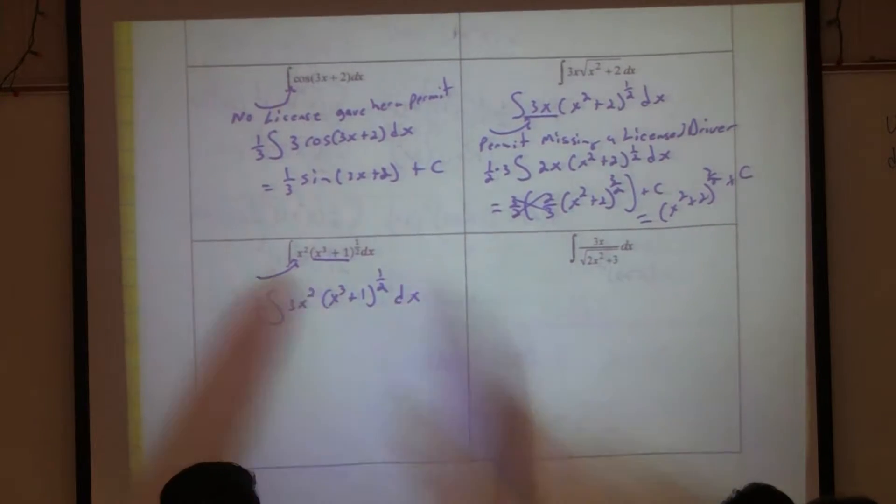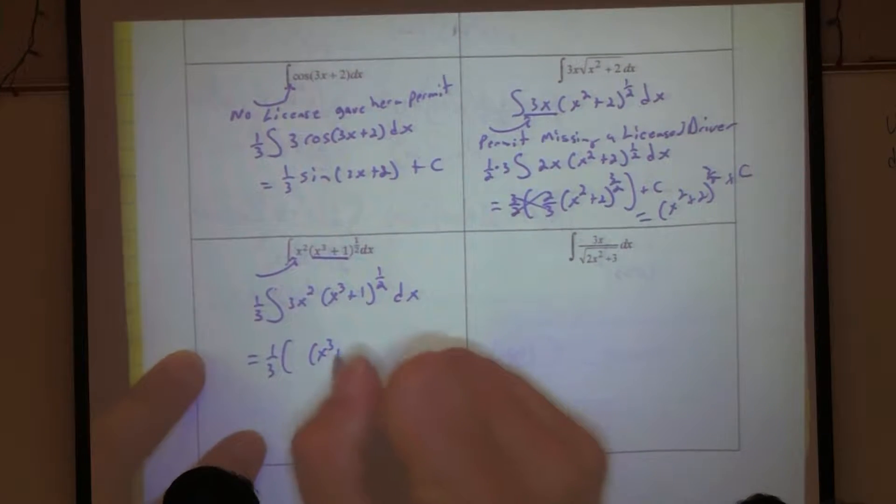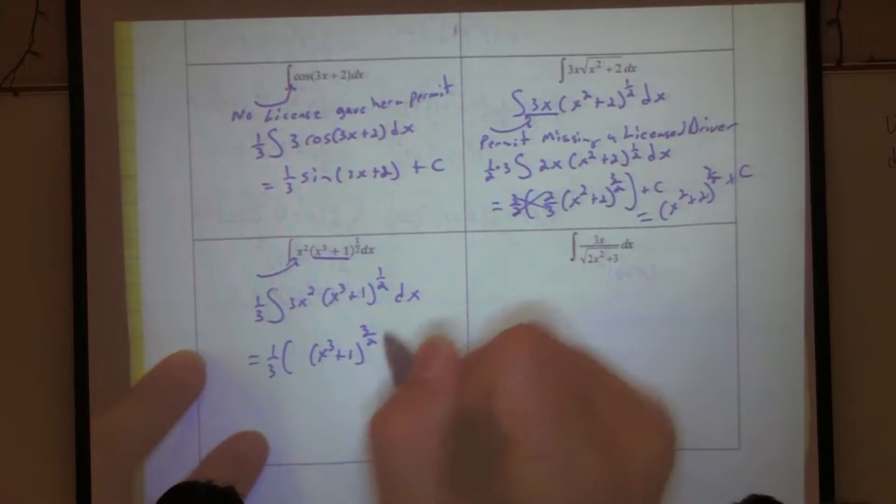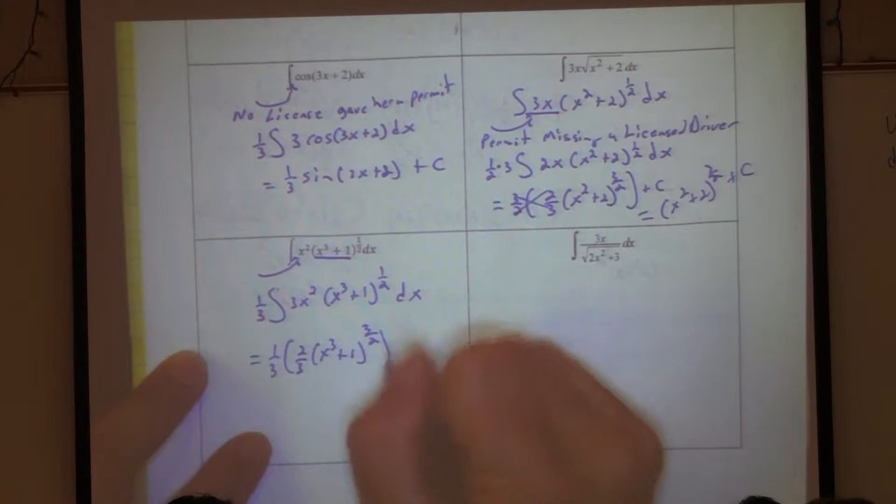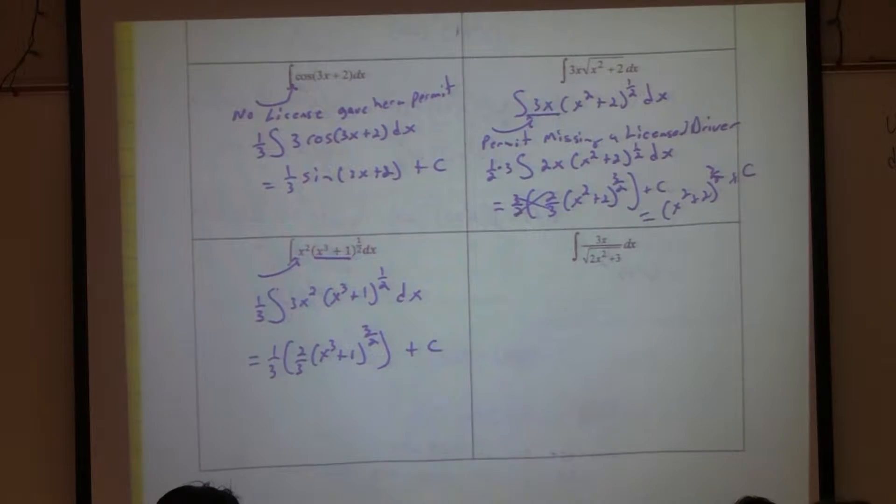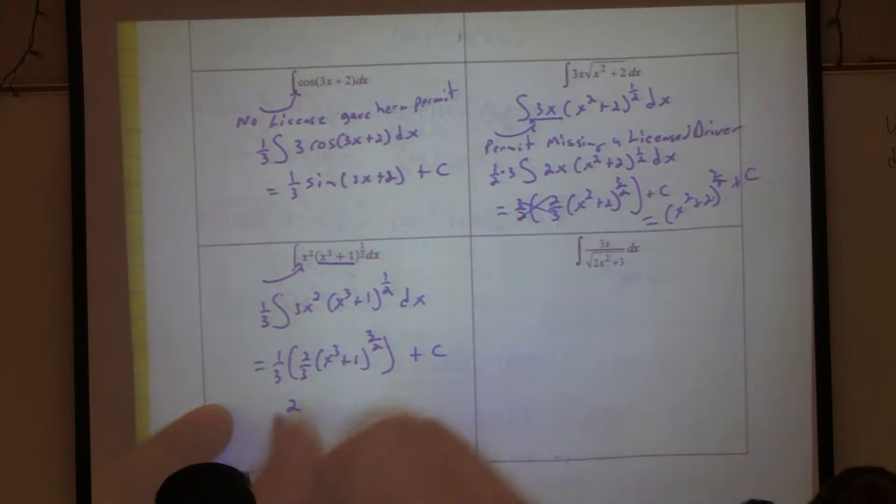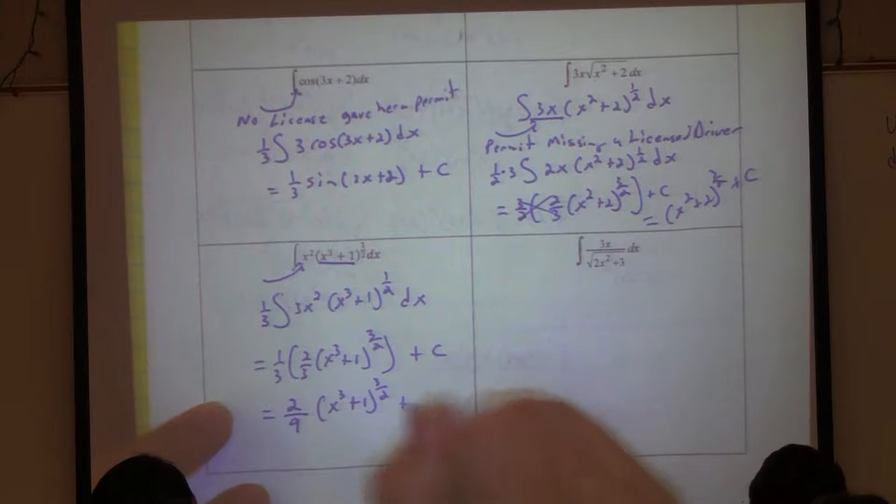So integrate that bad boy. 1 third parentheses will get x to the third plus 1 to the 3 over 2 times 2 over 3. 2 over 3 plus c. 1 times 2 is 2. What's 3 times 3, Monson? 2 over 3. Very good. Times x to the third plus 1 to the 3 over 2 plus c.